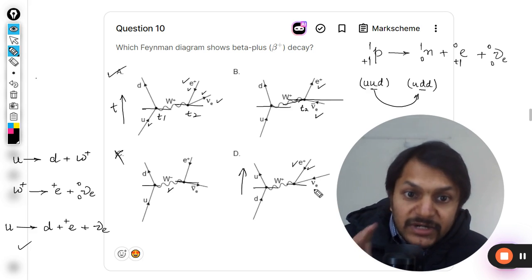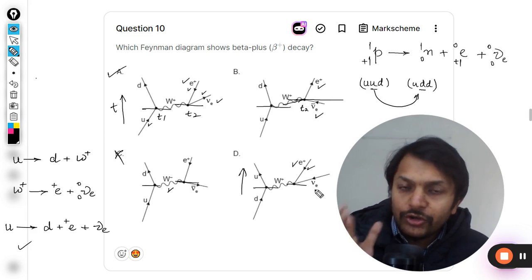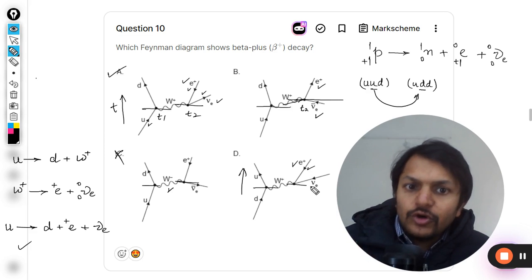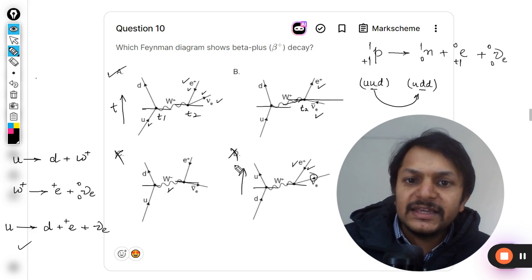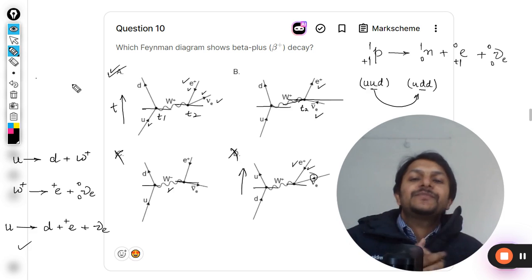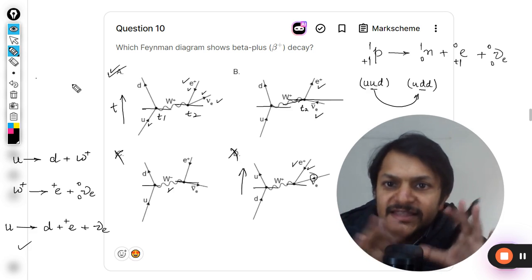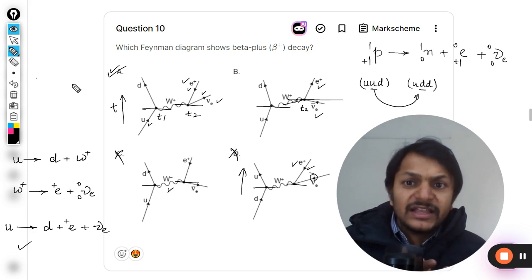The positron is an anti-particle, it is okay. But this is a particle, this is neutrino. So neutrino, the direction shown here is anti-neutrino. That is why D is also wrong, and clearly the answer will be A. This is how we understand these Feynman diagrams.